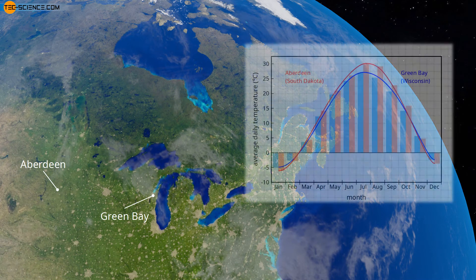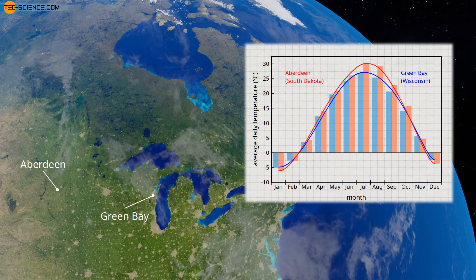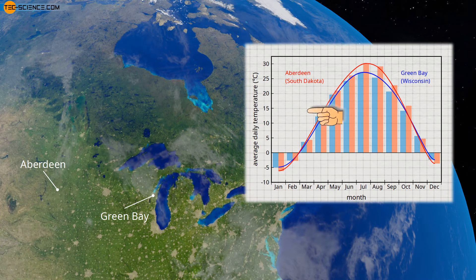The climograph shows the average daily temperature of the cities of Aberdeen and Green Bay in comparison. It can be seen that Green Bay, located on the Great Lakes, has lower average daily temperatures in the warm summer months than Aberdeen, located further inland. In the cooler winter months, however, Green Bay's average daily temperatures are at a higher level.